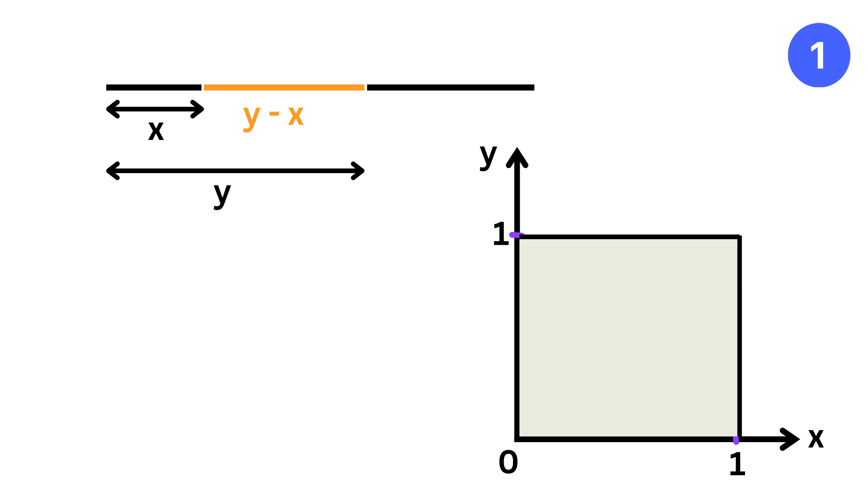Now if this is x and this is y, then this will be y minus x. And also if this is one and this is y, then this piece will be of length one minus y. So after breaking the stick, we have three pieces of length x, y minus x, and one minus y.